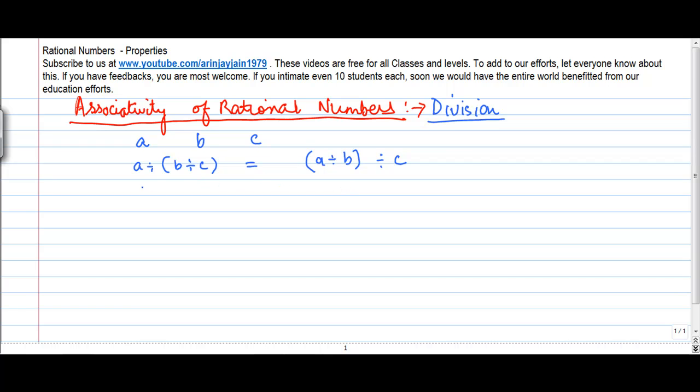Let's take the same set of numbers. So let's say we have 3/8 divided by 4/9 divided by 1/2, and on the right hand side we have 3/8 divided by 4/9 divided by 1/2. Are these two equal? There's a question mark there on the equality side.